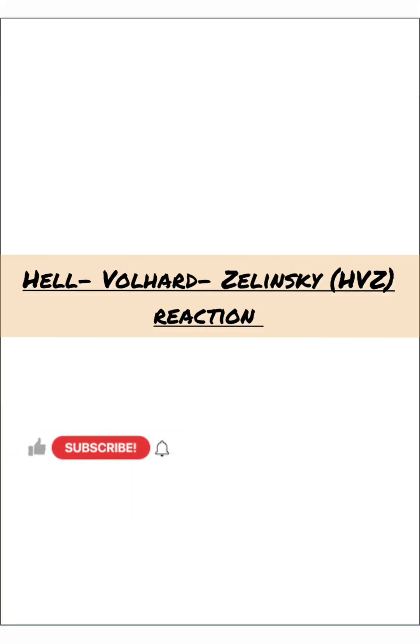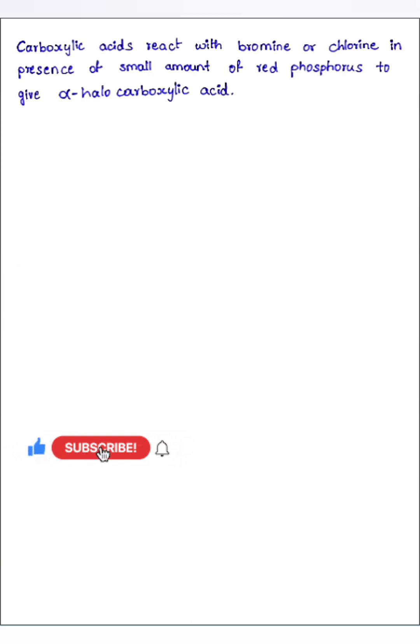Now let's understand the definition of this reaction. Carboxylic acids which are having an alpha hydrogen undergo halogenation, meaning they are reacting with bromine or chlorine in the presence of small amount of red phosphorus to give alpha-halo carboxylic acid as a product.